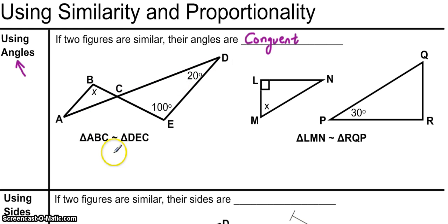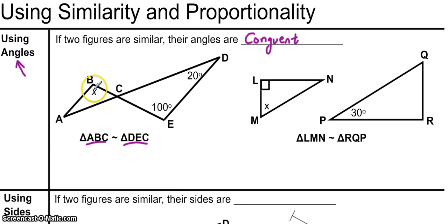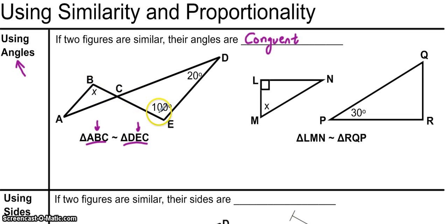This first problem states that triangle ABC is similar to triangle DEC, that angle D is 20 degrees, angle E is 100 degrees, and angle B is labeled with X. Since B is the second letter of this similarity statement and E is the second letter of this statement, angle B is congruent to angle E, which is 100 degrees. So X equals 100 degrees.